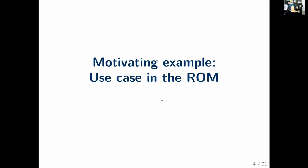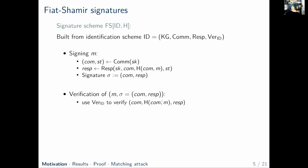Now let's go to the motivating example: a use case in the classical random oracle model. We decided to discuss Fiat-Shamir signatures. This is a Fiat-Shamir signature scheme built from an identification scheme and a hash function modeled as a random oracle. To generate keys, we use the key generation algorithm of the identification scheme. To sign a message, we use the commit algorithm to derive a commitment and a state, and then the response algorithm to define a response.